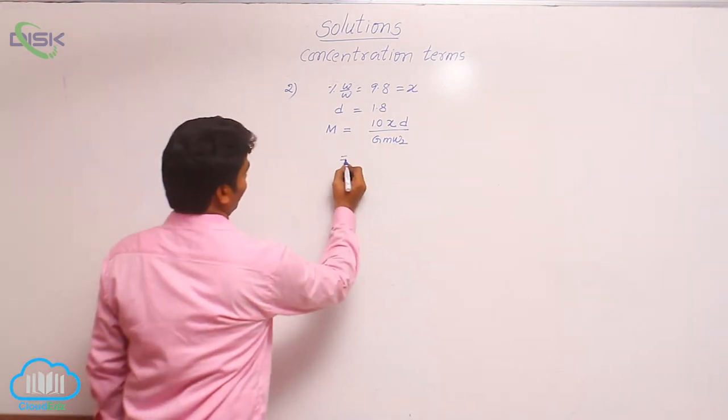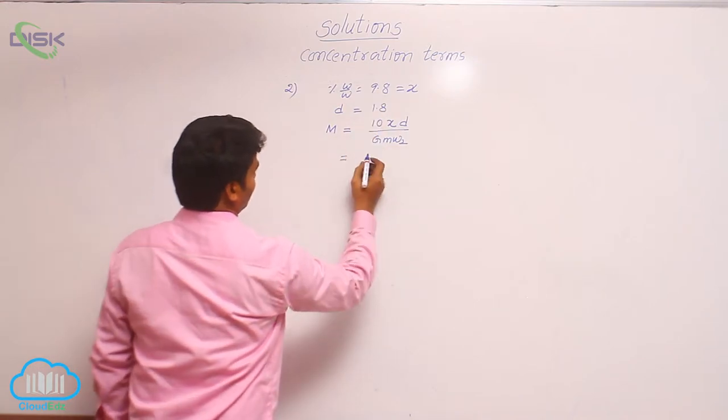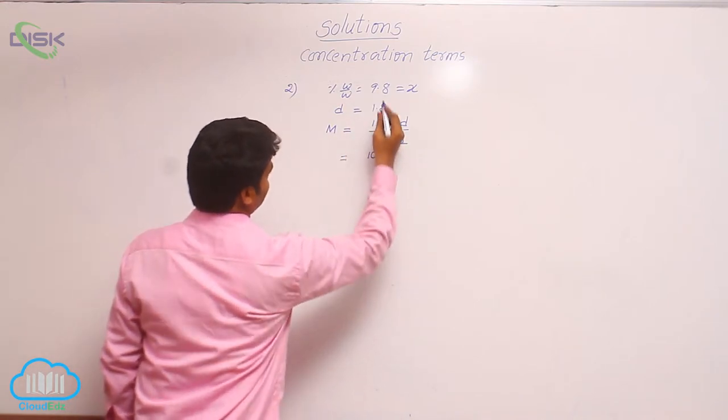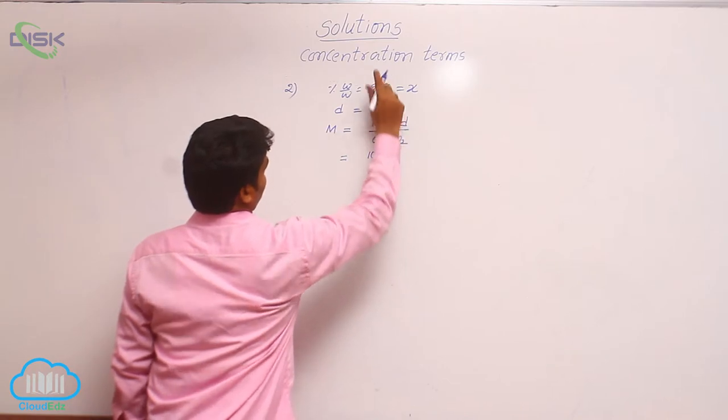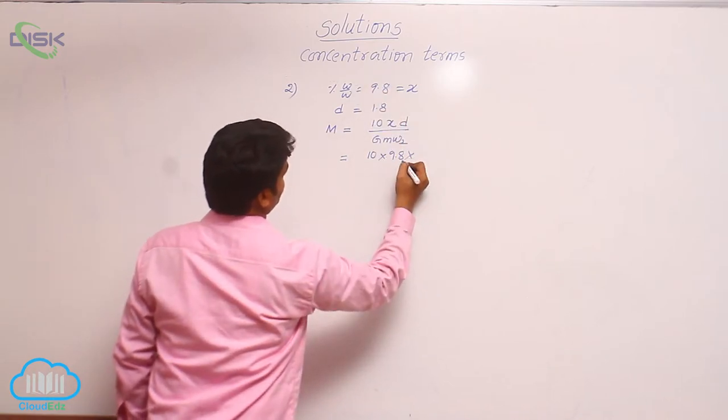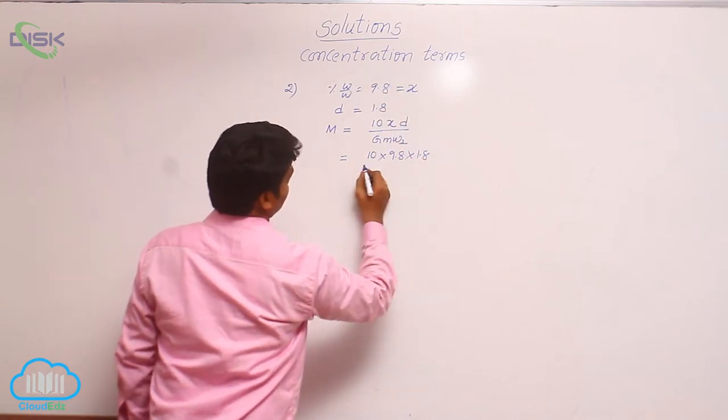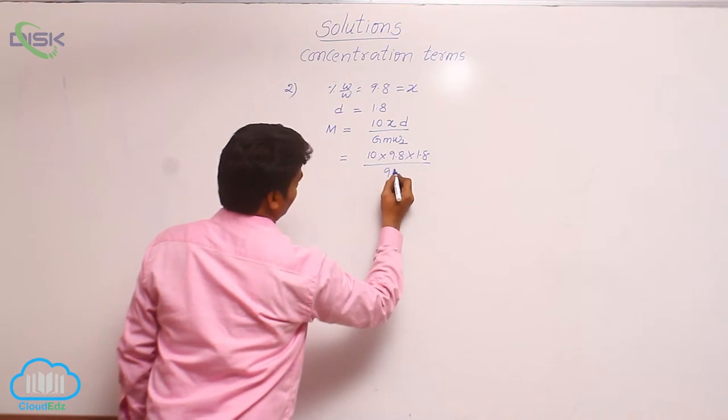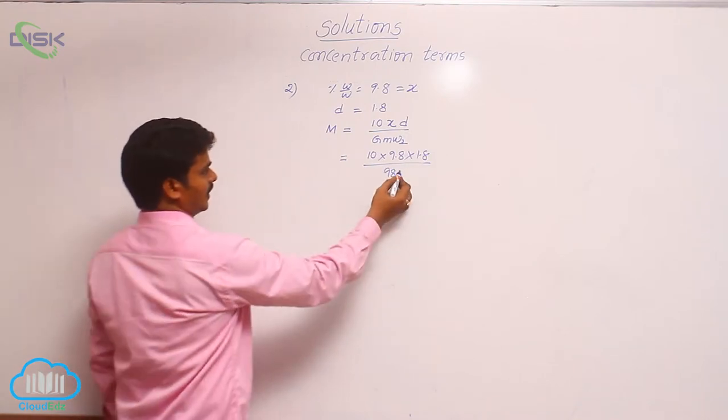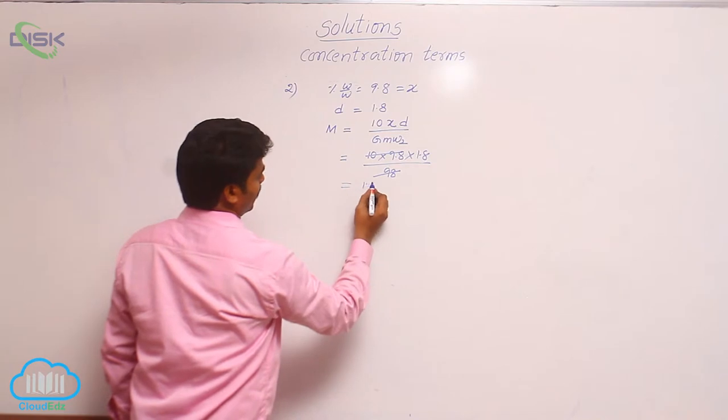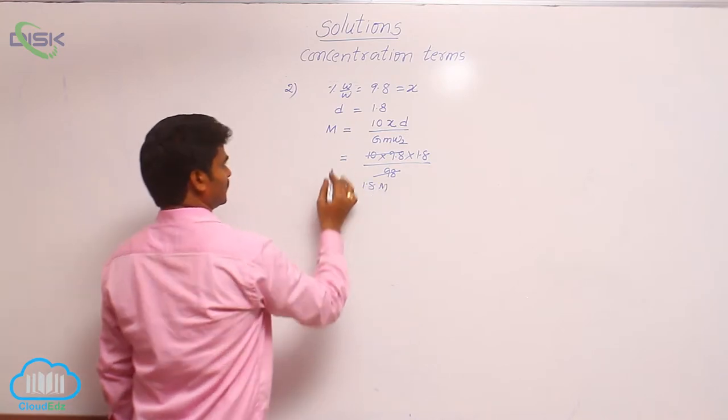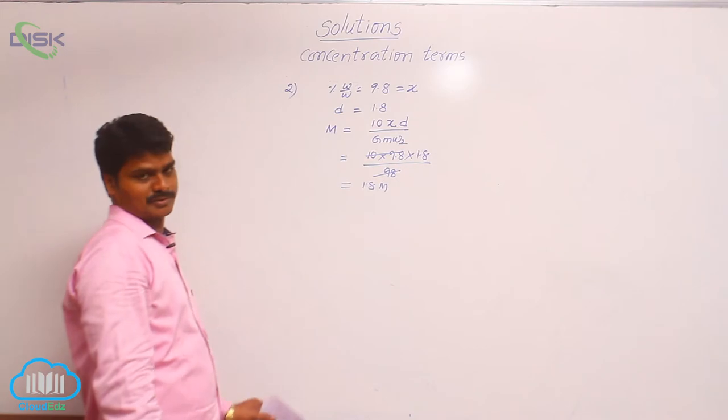So, using this formula, let us calculate the molarity. 10 into what is the X value? 9.8 into density 1.8 divided by gram molecular weight 98. Now, the value is 1.8 molar. So, this is the molarity of the given solution.